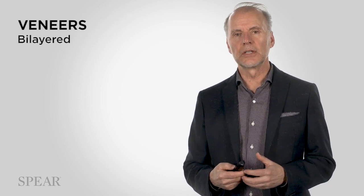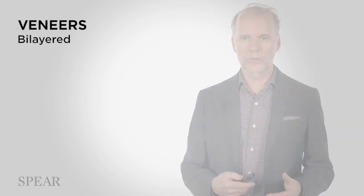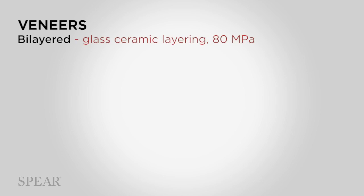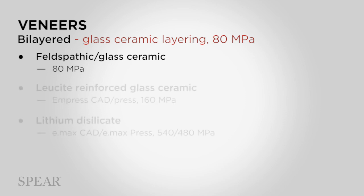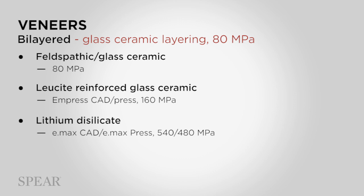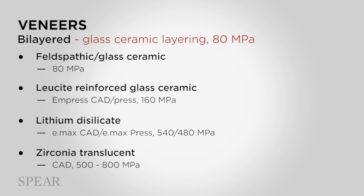When you get into bilayered veneers, the weak link is always the layering material that goes over the top of the substrate. That layering material is 80 megapascals in strength — feldspathic or glass ceramic materials. The lucite, lithium disilicate, and some translucent zirconias can also be layered with this 80 megapascal layering material, as specifically manufactured by individual manufacturers for their own materials.